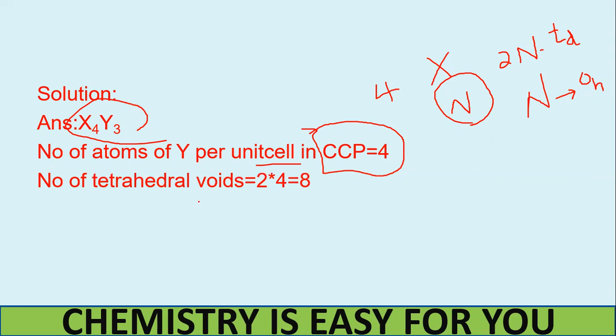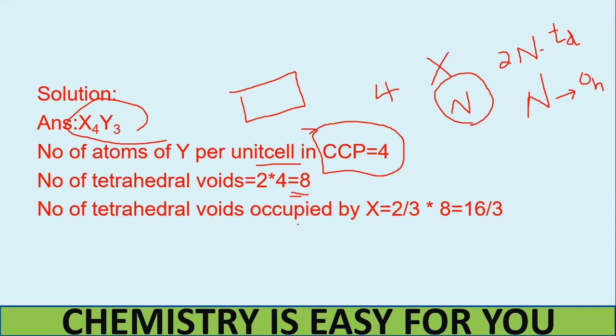So here what would happen? The number of tetrahedral voids will be 2N or 2 into 4 which is equal to 8. So the total number of tetrahedral voids in the whole unit cell is 8. But 2 by third of this is occupied by the element X. So 2 by 3 into 8 which is 16 by 3. So now you know the cubic closed pack structure which Y occupies has total number of 4. So we have 4 Y's and 16 by 3 of X. So if we substitute, the formula somehow becomes X 16 by 3 Y 4. Now if we try to remove the fraction, it will become X4Y3. That is the answer here. Hope it is clear to each one of you.